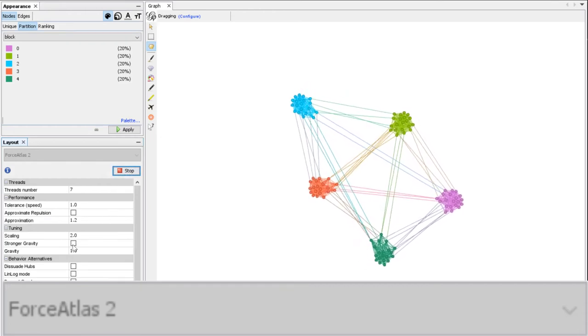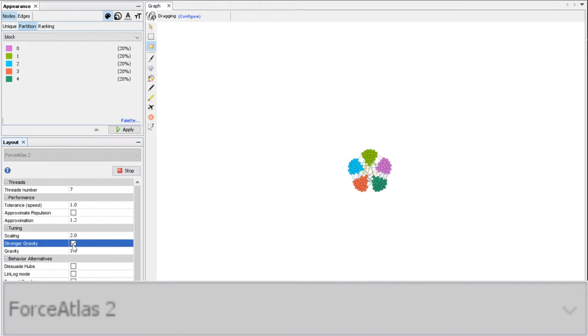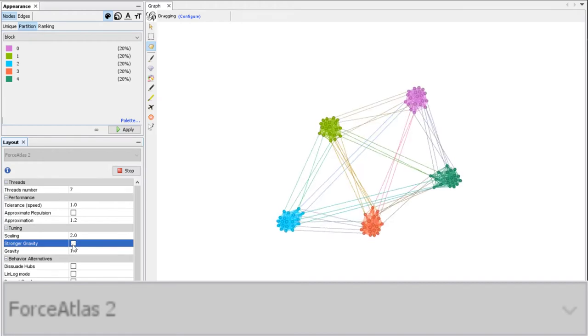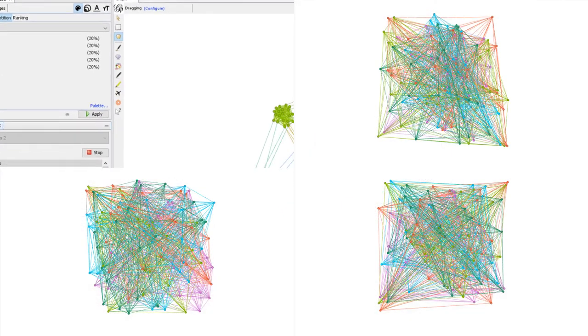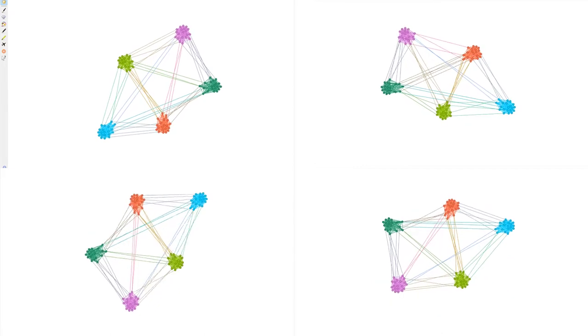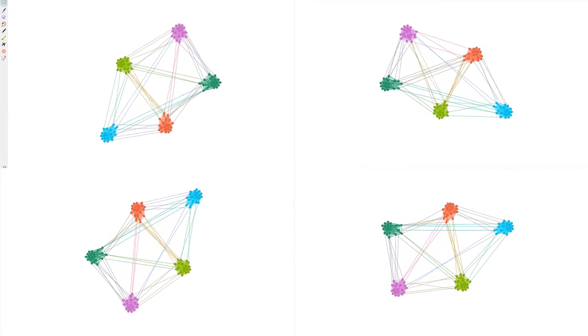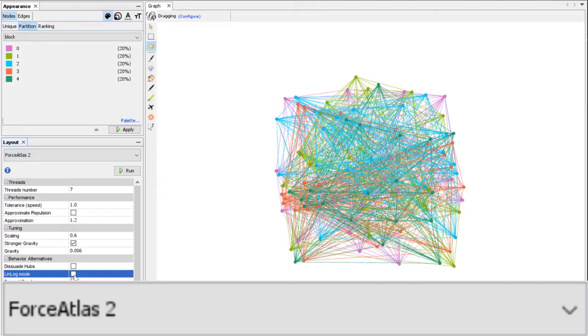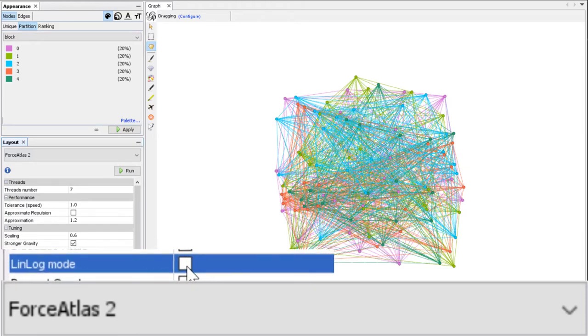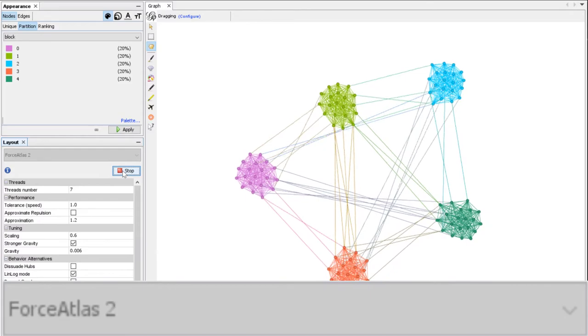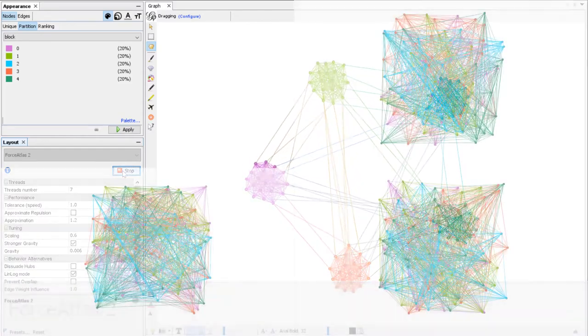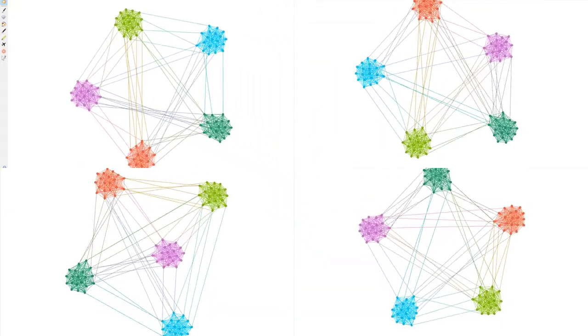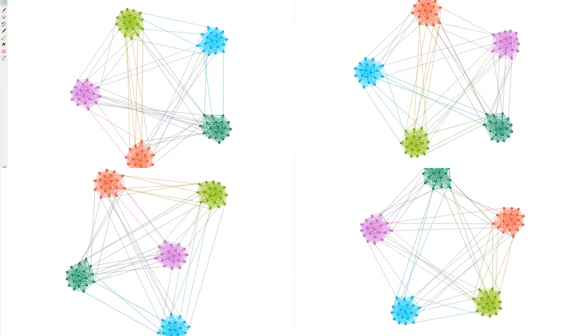If you check stronger gravity, it does this. And there is basically another algorithm embedded within Force Atlas 2 that you can activate by checking the linlog mode. It converges less quickly but it gives nicer clusters in many situations.